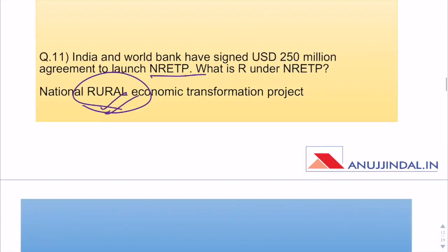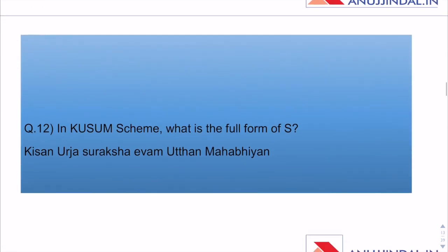India and World Bank have signed a US dollar 250 million agreement to launch NRETP — National Rural Economic Transformation Project. The full form of KUSUM scheme is Kisan Urja Suraksha Evam Utthan Maha Abhiyan.